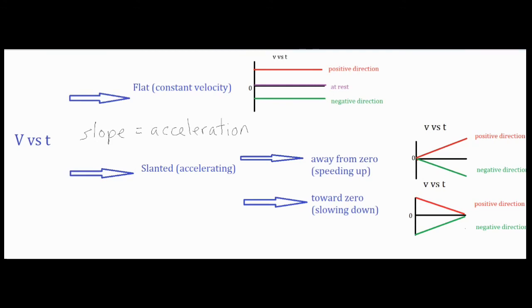And just like what we saw in the top here, if you want to see the direction that the object is moving, you just take a look at the line's position in respect to the x-axis. If it is above zero, then it is definitely moving in the positive direction. If it is below zero or below the x-axis, then it is definitely going in the negative direction.